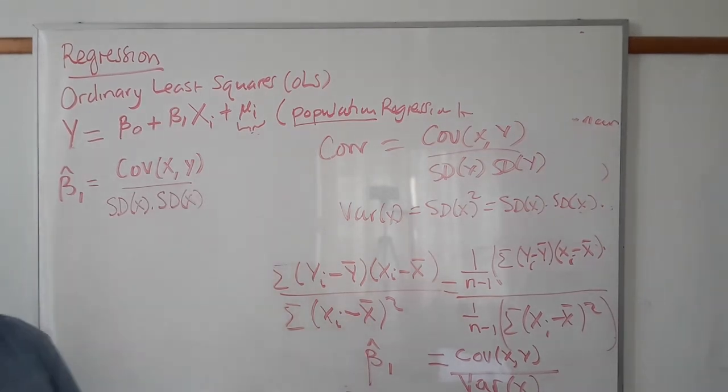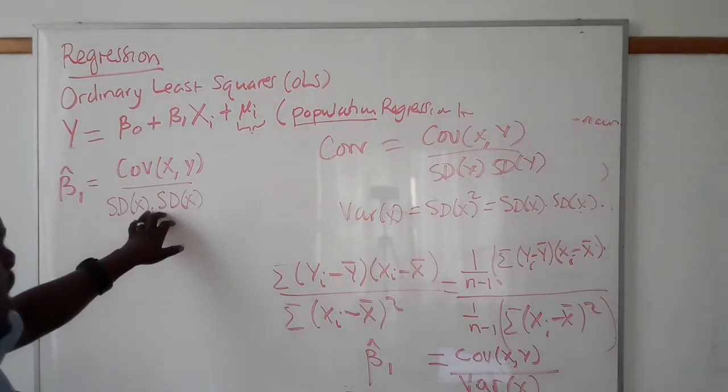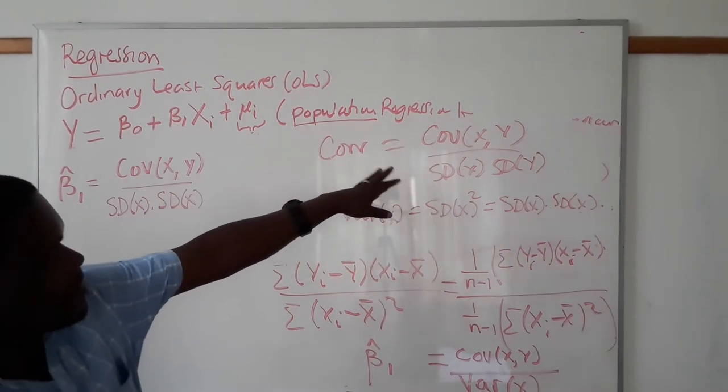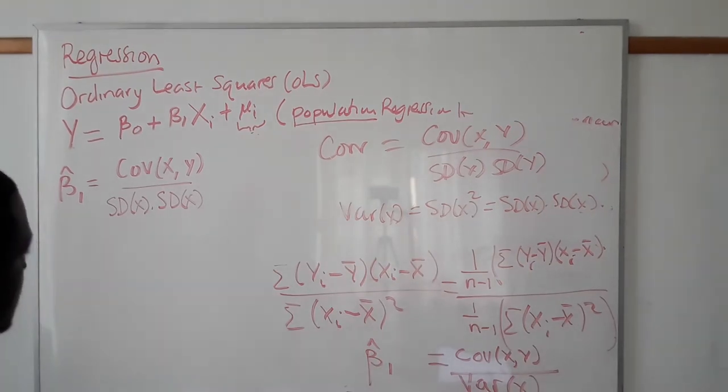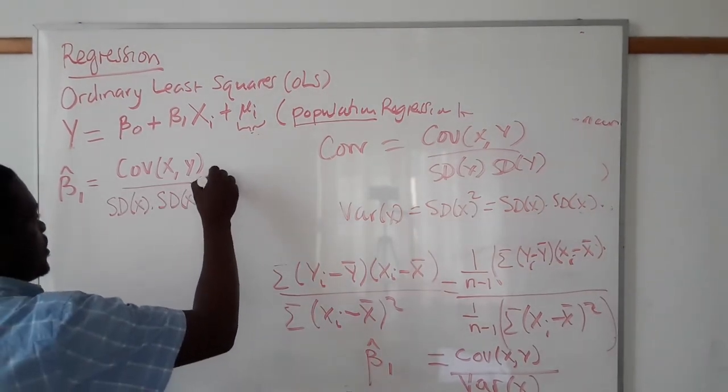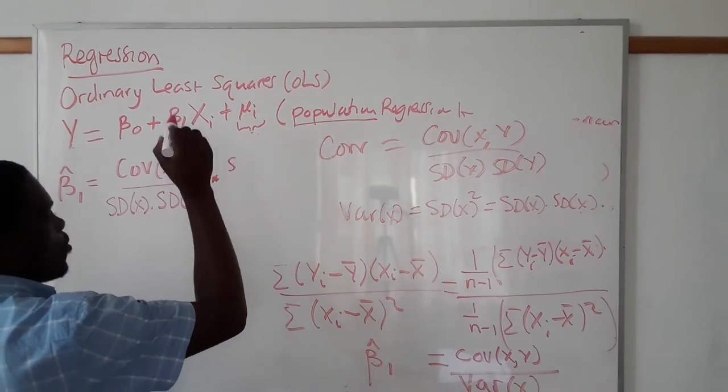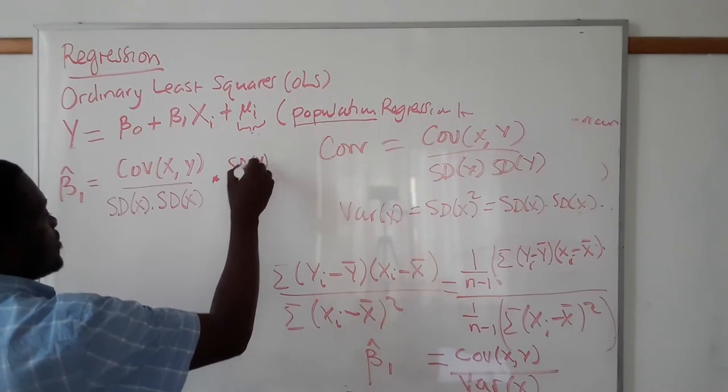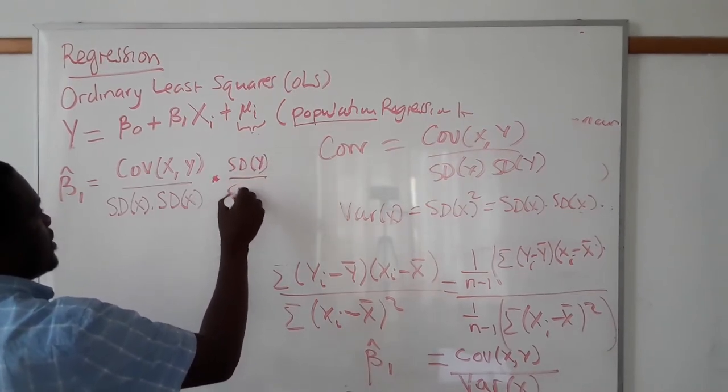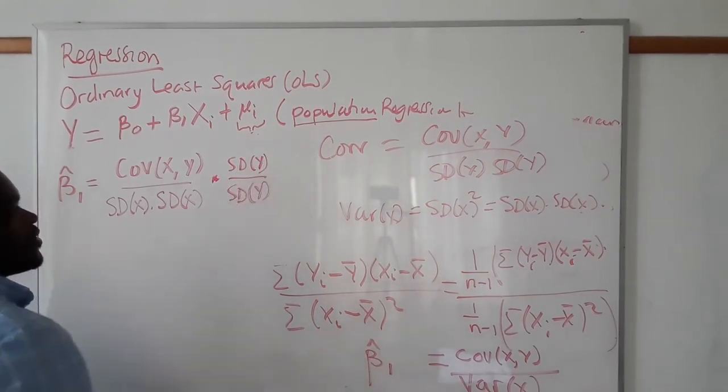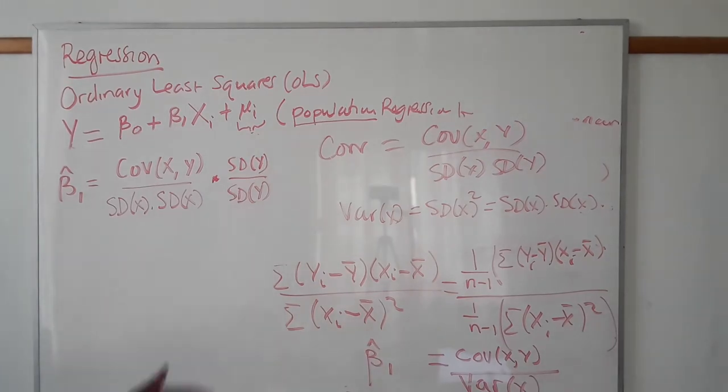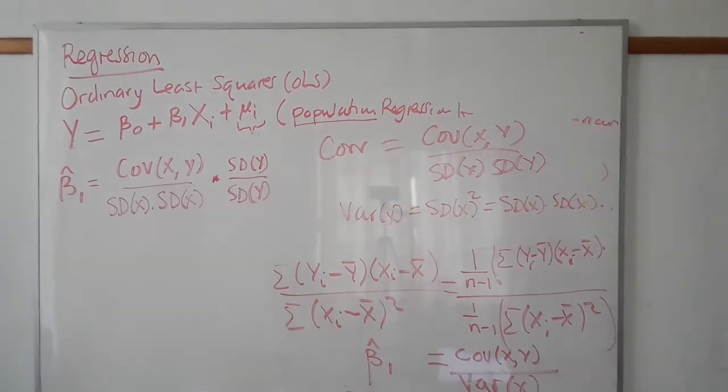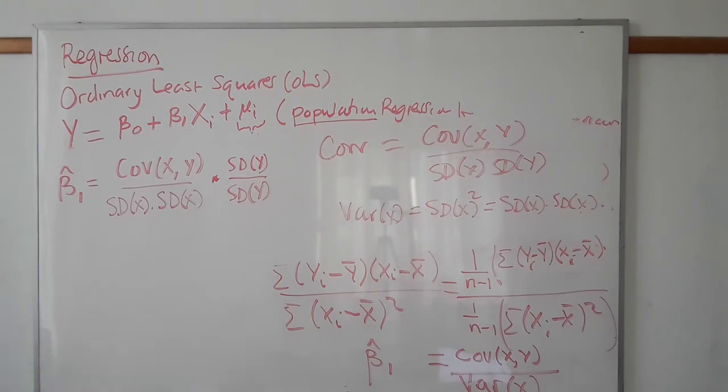Then the question to think about is, how do I introduce standard deviation of Y to the denominator to arrive at correlation? I have to multiply this expression by 1. And this 1, I will think of it in terms of standard deviation of Y over standard deviation of Y. This number here is 1. I haven't changed anything, I only multiplied by 1.